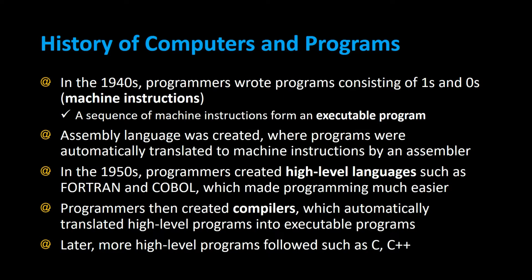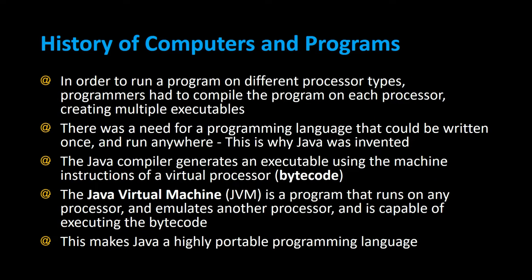Later, more high-level languages followed, such as C and C++. In order to run a program on different processor types, the programmer had to compile the program on each processor separately, creating multiple executable files.